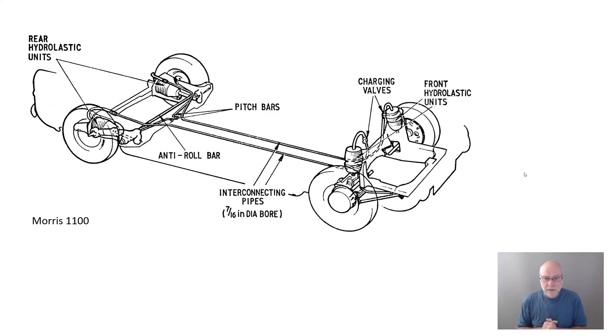Here's a Morris 1100. Same sort of system, similar hydroelastic. There's your interconnecting pipes front rear. Under braking, the car will want to pitch, but it's limited in its pitch acceleration by the damping of pitch and also by the diameter of these interconnecting pipes because they cause a restriction to flow. The Morris 1100 also runs pitch bars, which are torsion steel springs connecting the suspension to the body.